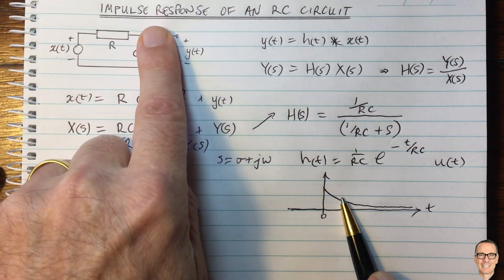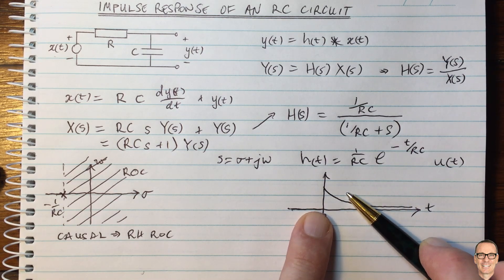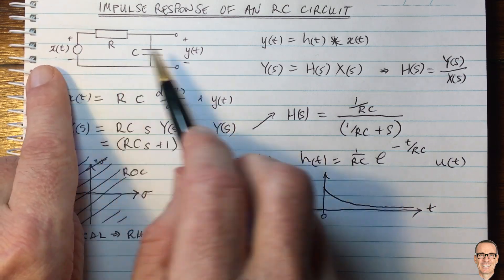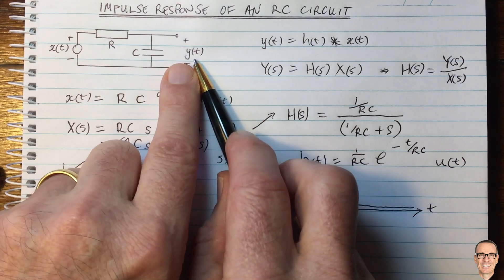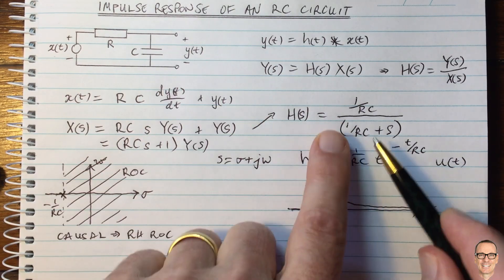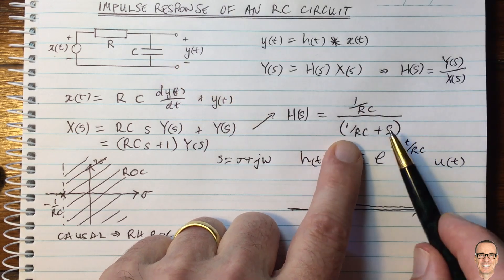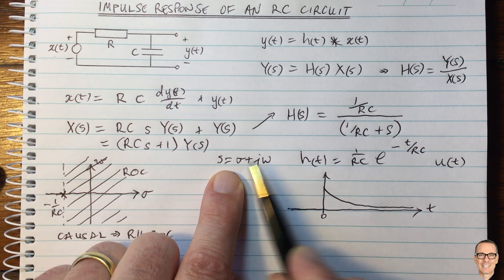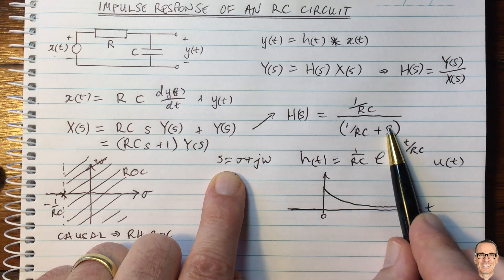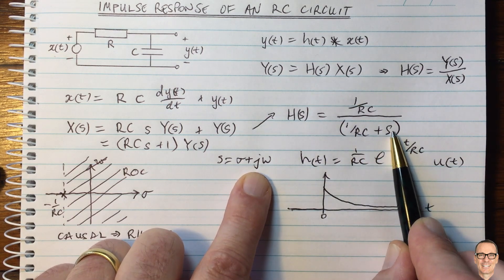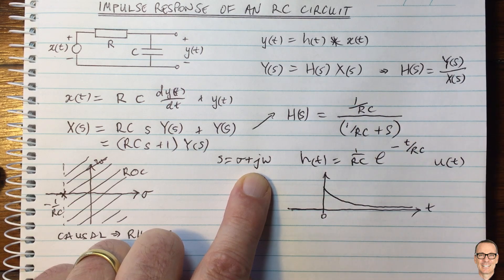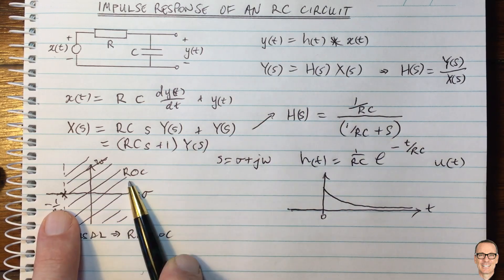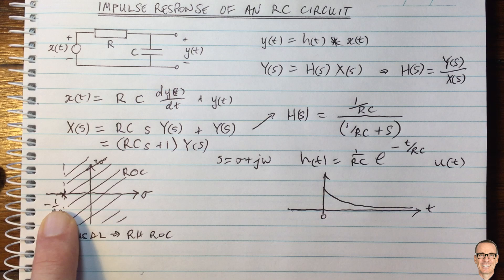So this is the impulse response — what can it tell us? If we take the Fourier transform of it, we get the system frequency response, which tells us how this circuit alters the signal from input to output. We already have that: to find the frequency response, we simply set S equal to j·omega — that is, set sigma equal to zero in the transfer function H(S). This also helps to understand the relationship between the Laplace transform and the Fourier transform.